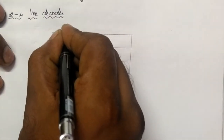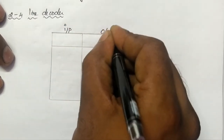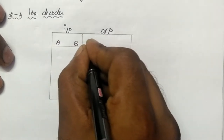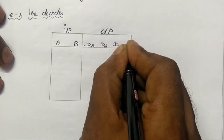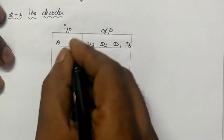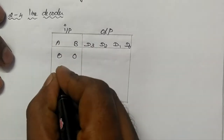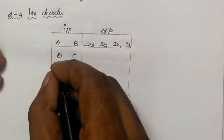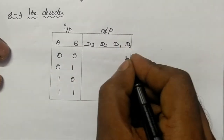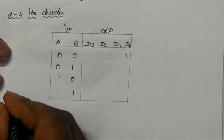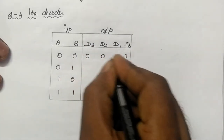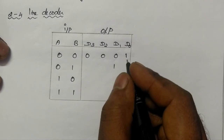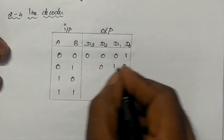Here the inputs and outputs. I am considering the inputs as A and B, and outputs as D3, D2, D1, and D0. The possible input combinations are 0,0 and 0,1. When the input is 0,0, the D0 output will be equal to 1, remaining outputs are 0. When 0,1, D1 output is equal to 1, remaining outputs are 0.